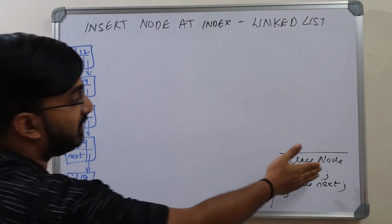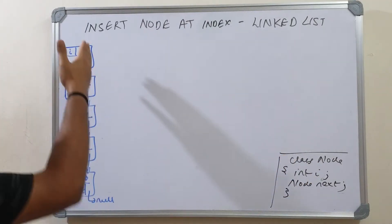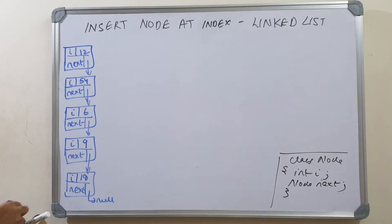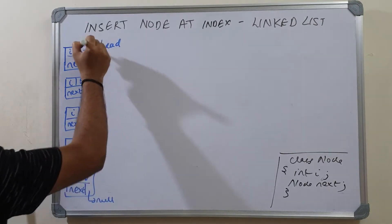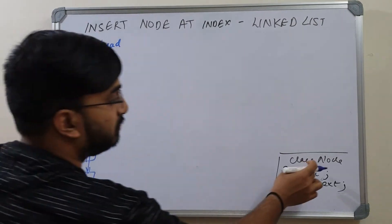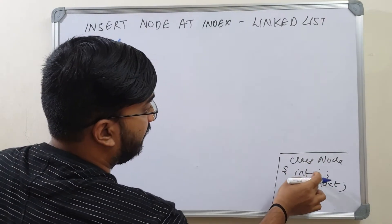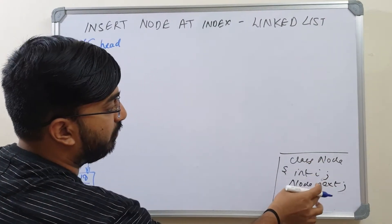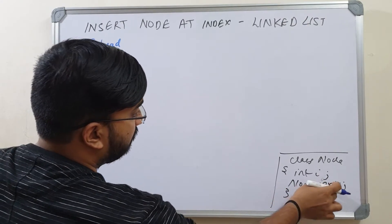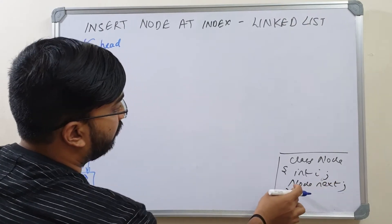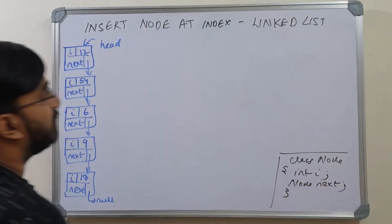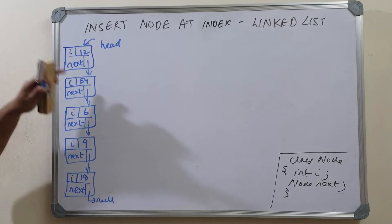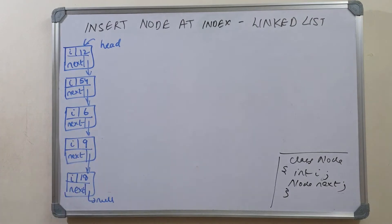This is the class node we are using, and this is the linked list we have, and this is our head. The class node has an integer i that stores the value, and a reference next that is of type node that stores the link to the next node, and this is the linked list we are using.